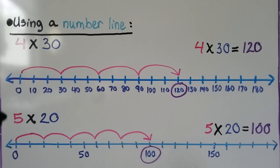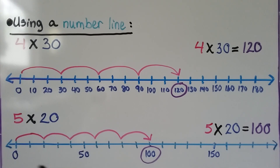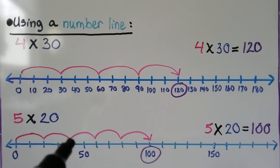Here we have 5 times 20. Let's look at the scale first — it has blank tick mark lines and then goes 50, 100, 150. If we count the lines starting from zero, there are 5 between each labeled mark, so each little line must be a 10. We know each little line is a 10, so we're going to skip 2 of them for each jump of 20. We need 5 jumps of 20: 1 jump, 2 jumps, 3 jumps, 4 jumps, 5 jumps — and we land at 100. So 5 times 20 is equal to 100.